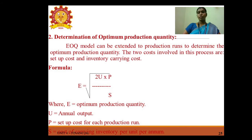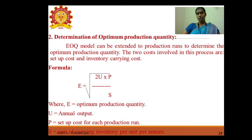Determination of optimum production quantity: the EOQ model can be extended to the production range to determine the optimum production quantity. The two costs involved are setup cost and inventory carrying cost. Formula: Optimal Production Quantity = √(2U × P ÷ S), where U = annual output, P = setup cost per each production run, and S = cost of carrying inventory per unit per annum.